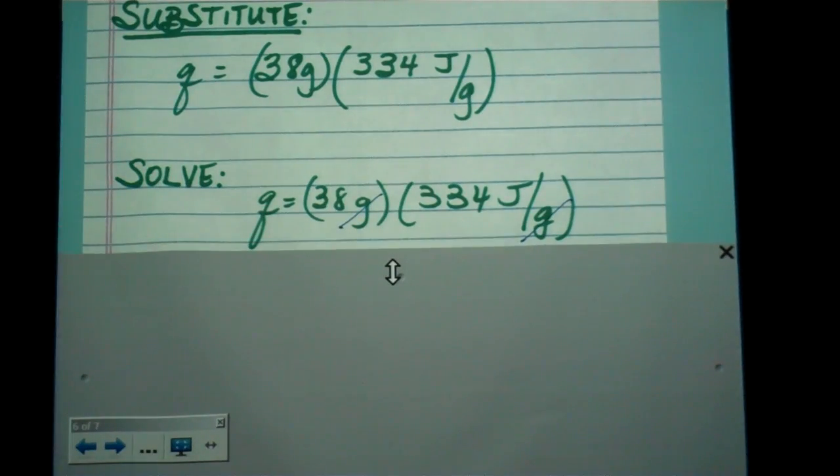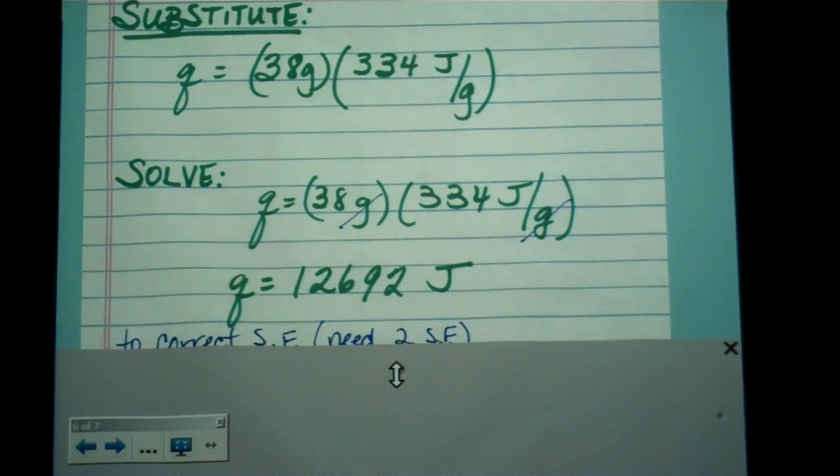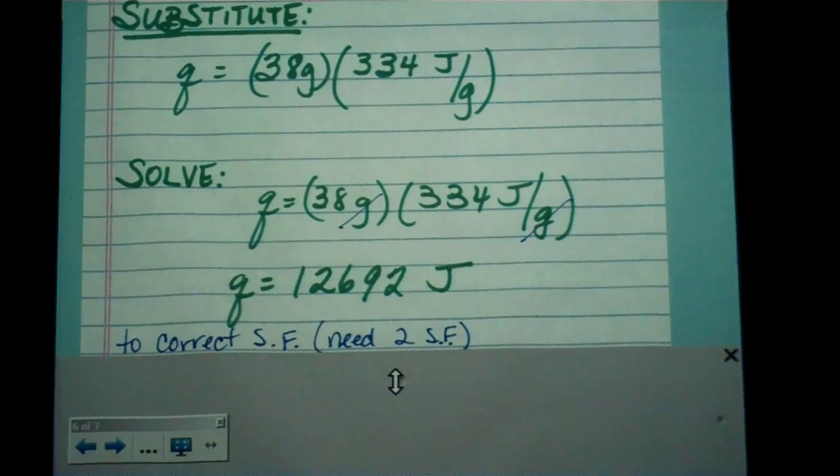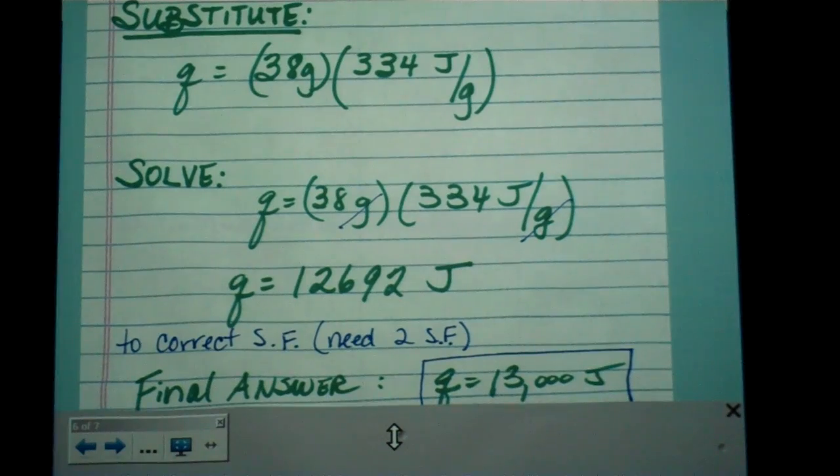So, solving. Here's the grams canceling. Left with our joules over here. And now we have 12,692 joules. We need to correct for the significant figures. We only need two sig figs. So our answer is rounded up to 13,000 joules.